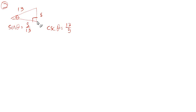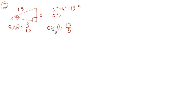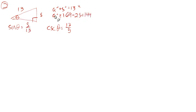But we do know that this side squared plus this side squared equals 13 squared. So we could say a² + 5² = 13². So a² equals 169 minus 25, which is 144. Remember, that's a squared — that's the value of this side when you square it. And the square root of 144 would be 12.